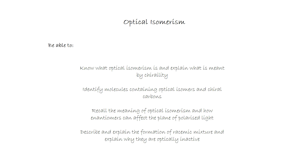By the end of this lesson, we should be able to do the following things. We should know what Optical Isomerism is and explain what is meant by chirality. We should be able to identify molecules containing Optical Isomers and Chiral Carbons, recall the meaning of Optical Isomerism and how Enantiomers can affect the plane of polarised light. And finally, describe and explain the formation of racemic mixtures and explain why they are optically inactive.